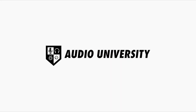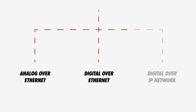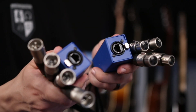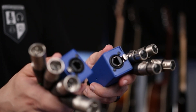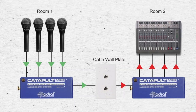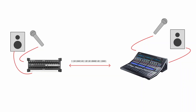The first thing to be aware of is that there's a difference between analog audio over an ethernet cable, digital audio over an ethernet cable, and digital audio over an IP network. You can send four channels of analog audio over an ethernet cable using each of the four pairs of wires — it's basically a very affordable four-channel analog audio snake. With a digital protocol like AES50, you can convert analog audio to digital and send dozens of channels between two devices.